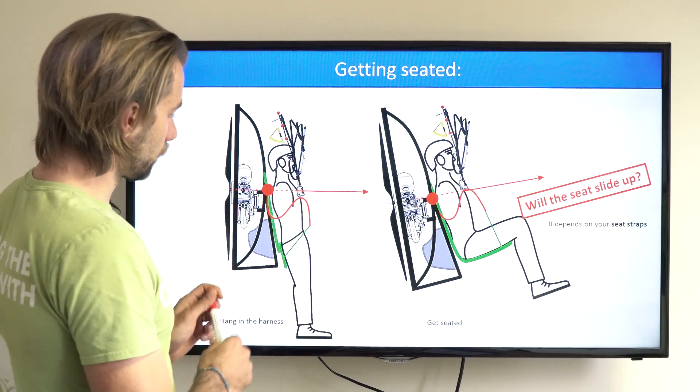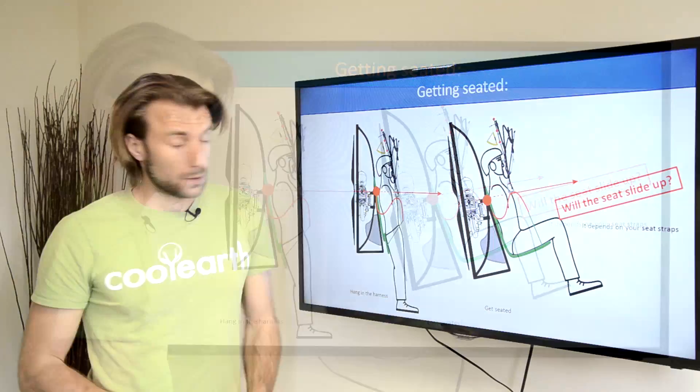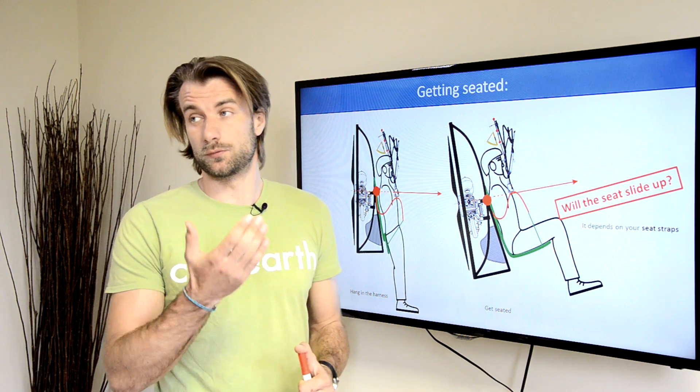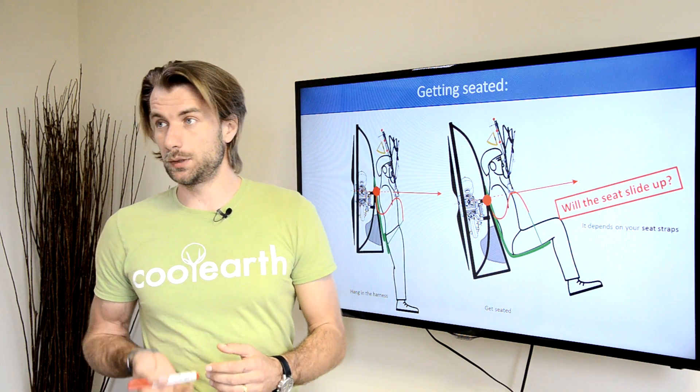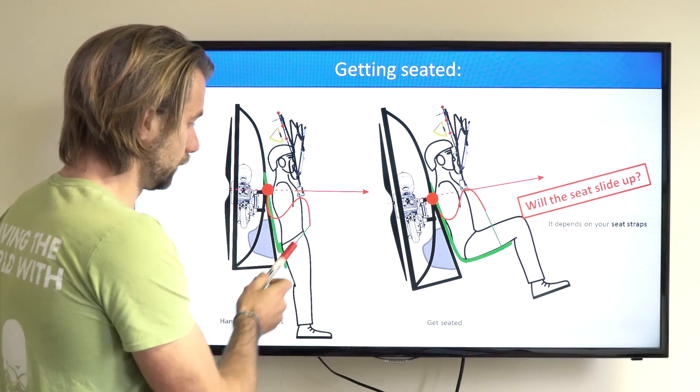As it's locked out and when you raise your knees, the crucial point is the relative position of your butt and this strap. If your butt is lower than this strap, it's totally useless to raise your knees because the seat board will not slide up, it will not be pulled by the seat board strap.